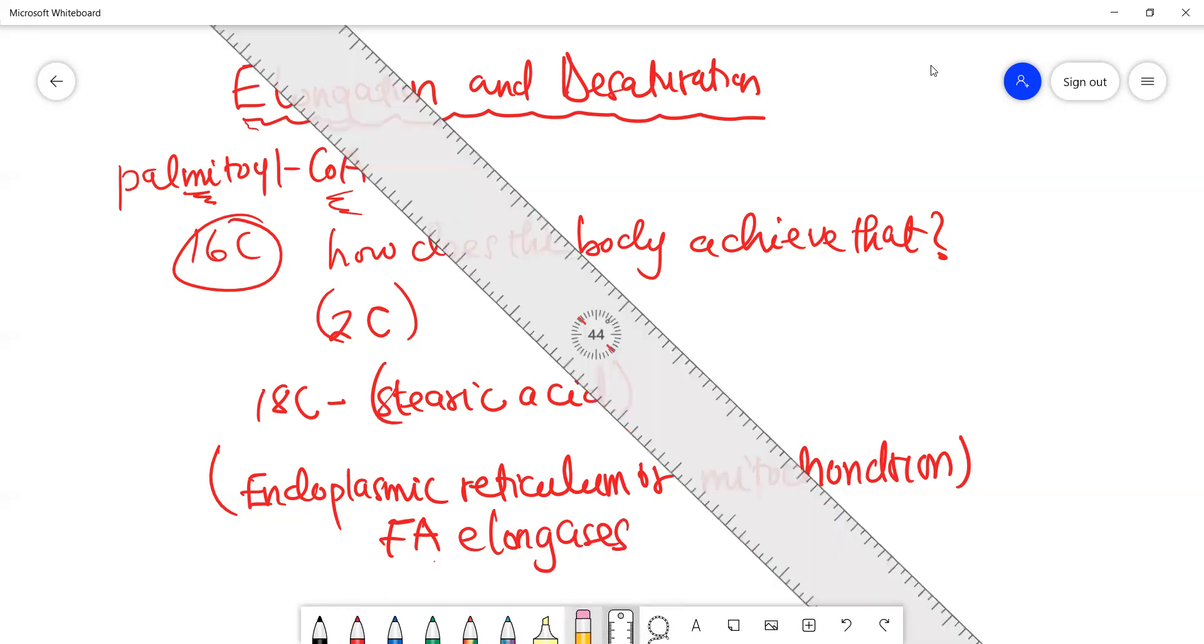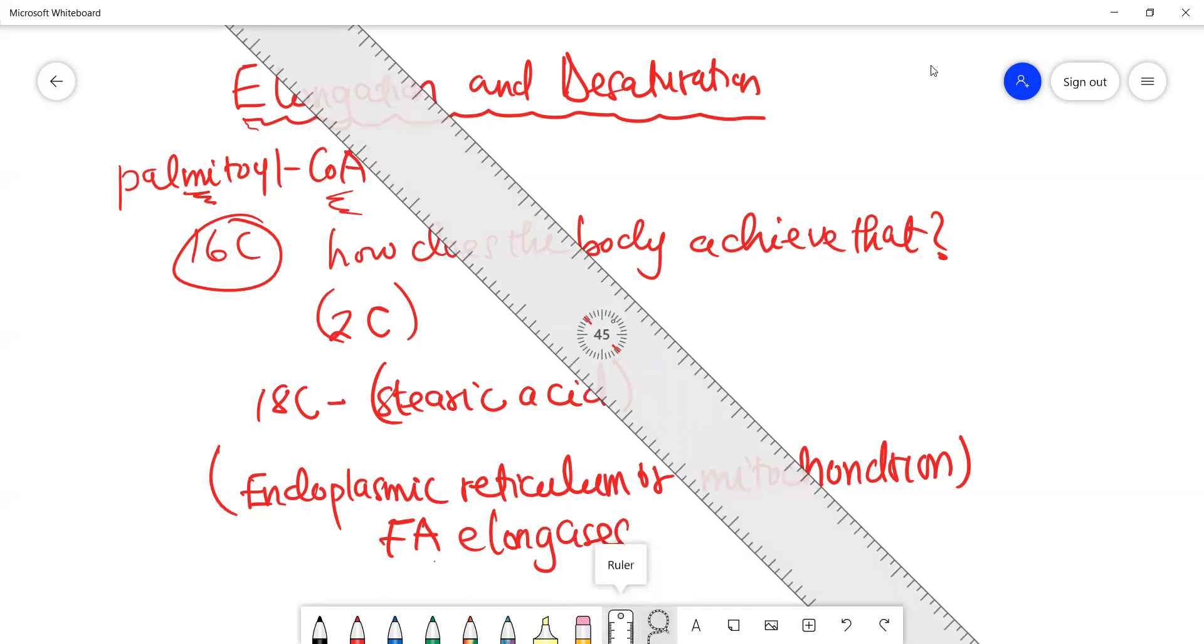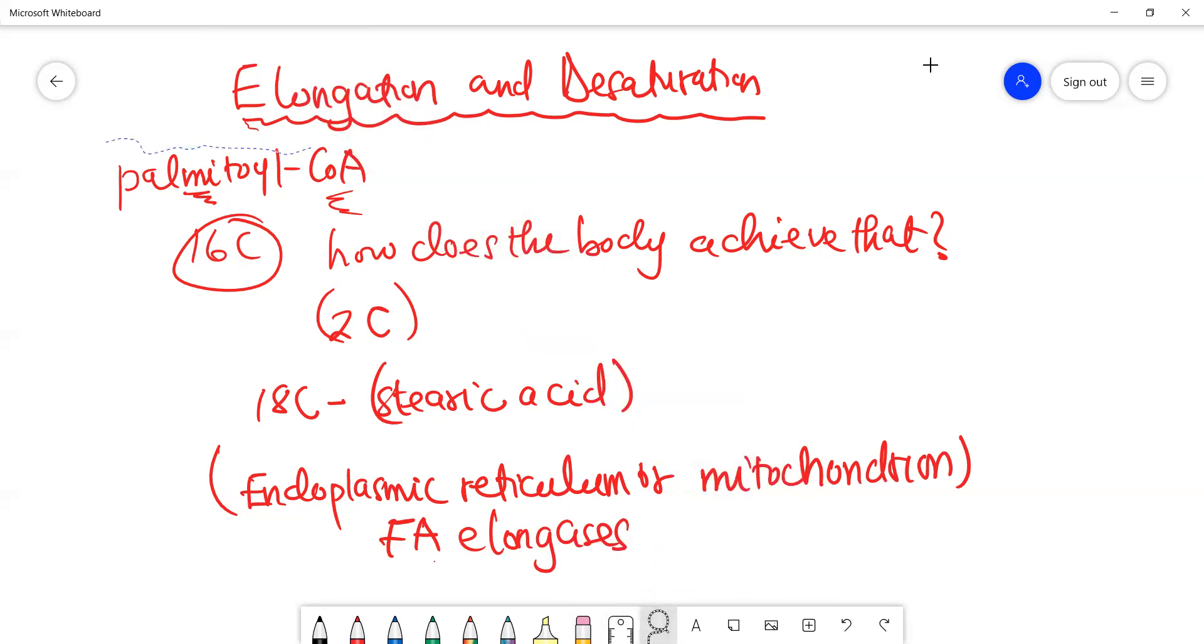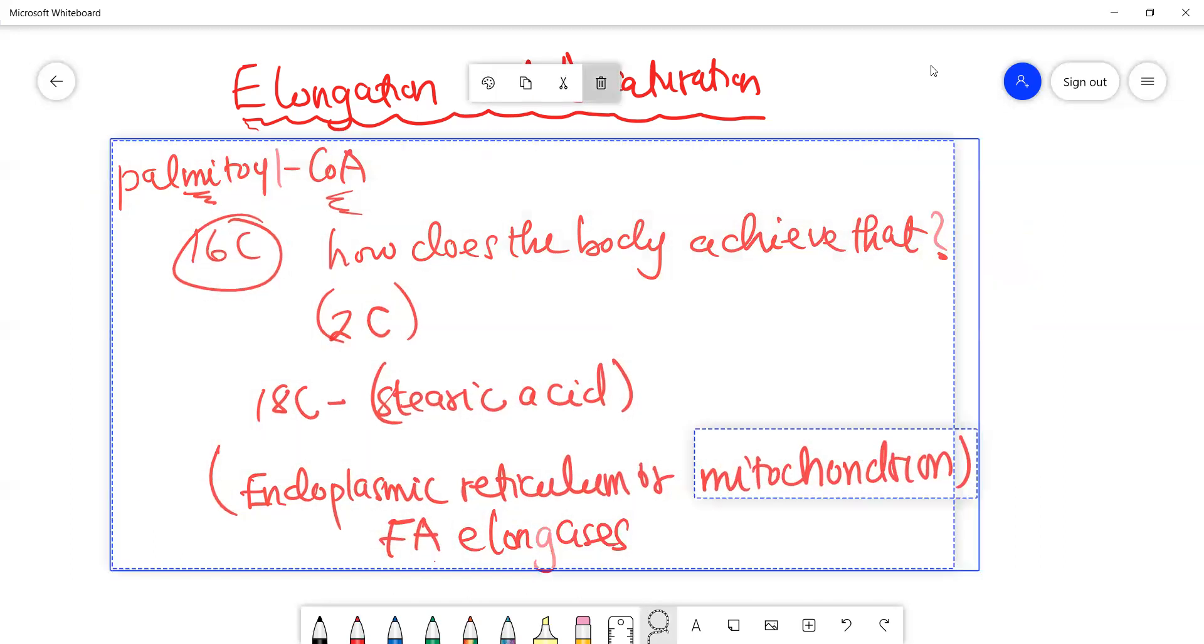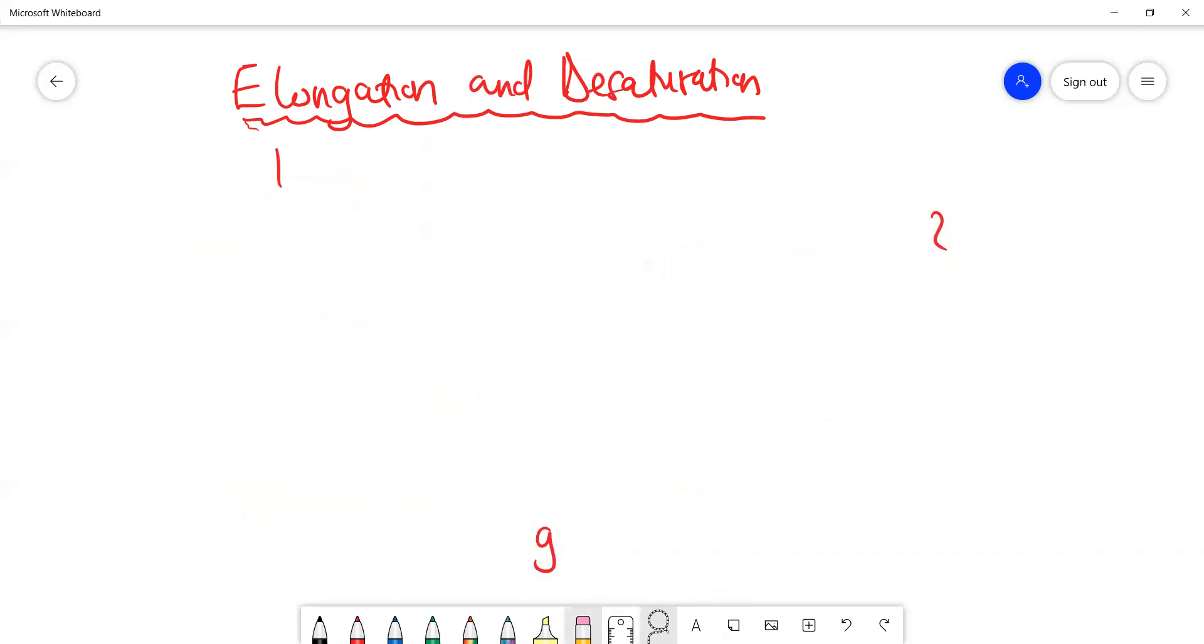Now let's look at desaturation. Desaturation is introducing unsaturation into the fatty acid, and we are looking at introducing double bonds.